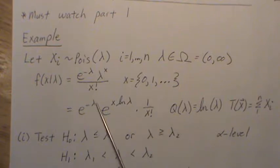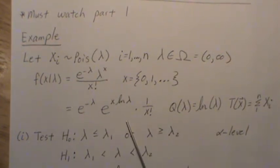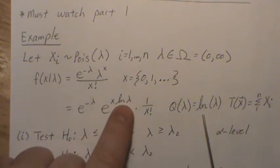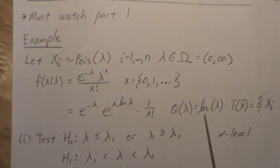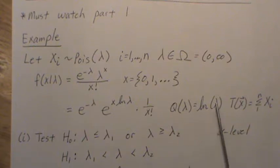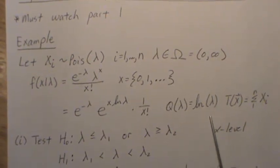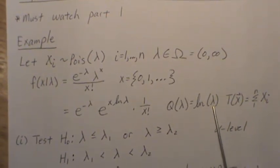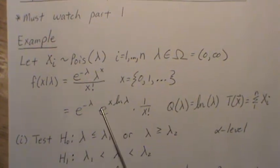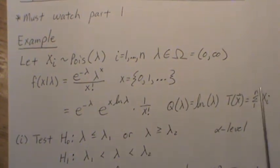You can rewrite it in this form which is easier to see that it is part of the exponential family. The natural log of lambda is what we called q and according to the theorem this has to be strictly increasing in the parameter and it is. Our test statistic is the sum of those values.